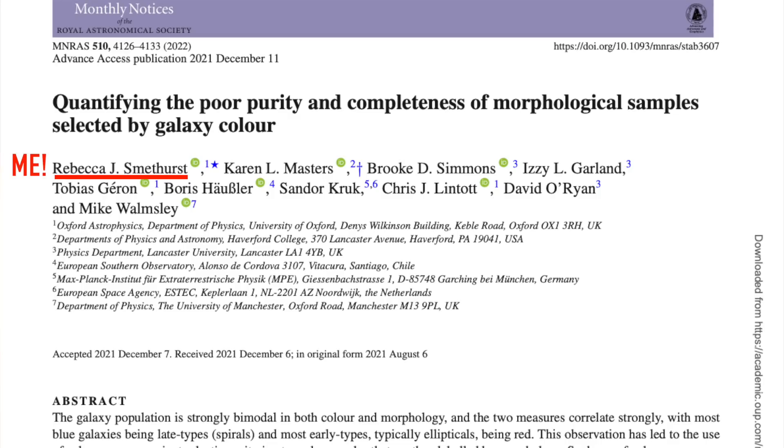The ultimate goal of any scientist doing a research project is to write up what they found, write up your results and get it published by a science journal so that you can share all this new knowledge you've gained with the world. That is exactly what I did last month when my paper on the colours and shapes of galaxies was published by the Monthly Notices of the Royal Astronomical Society.